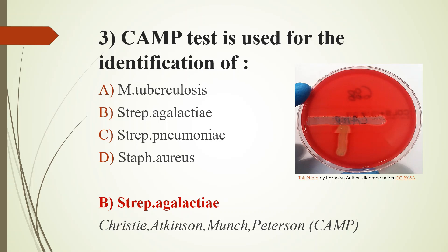CAMP test is an acronym for the authors of this test: Christie, Atkinson, Munch and Patterson. It is used to distinguish Streptococcus agalactiae from other species of beta-hemolytic streptococcus. Streptococcus agalactiae is a member of Lancefield group B streptococcus, which causes mastitis in cows — an important point for the animal husbandry exam.